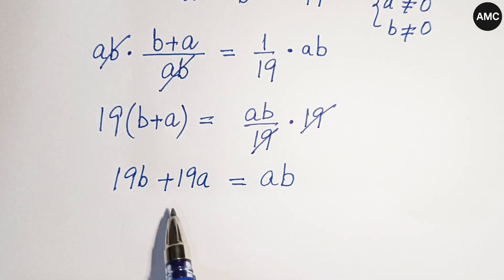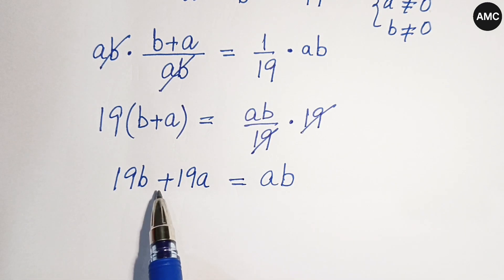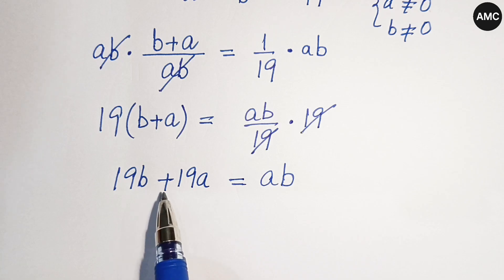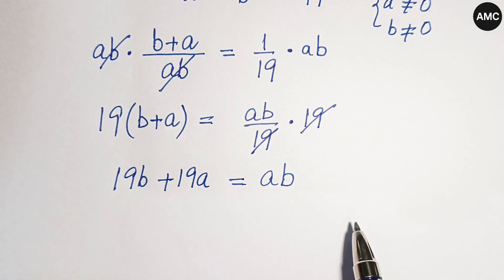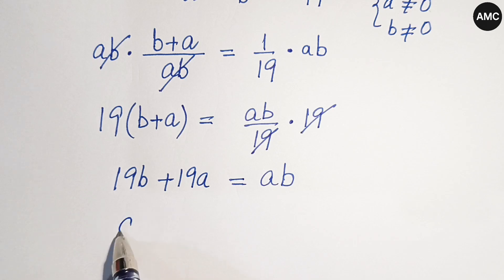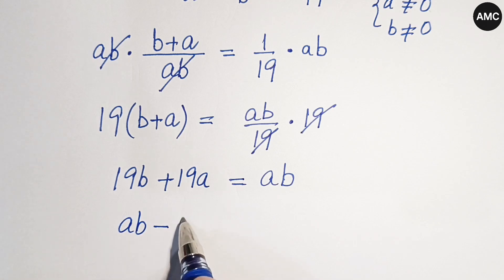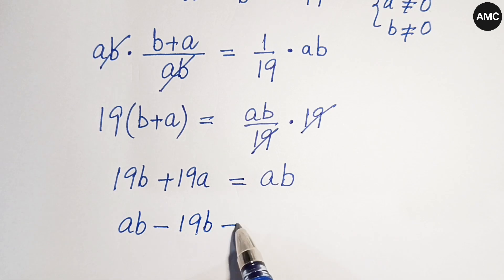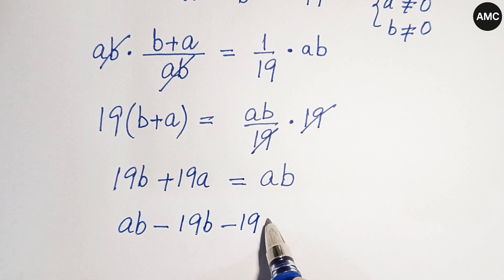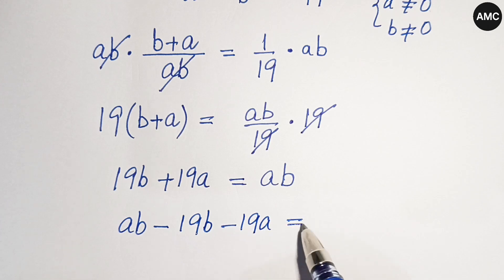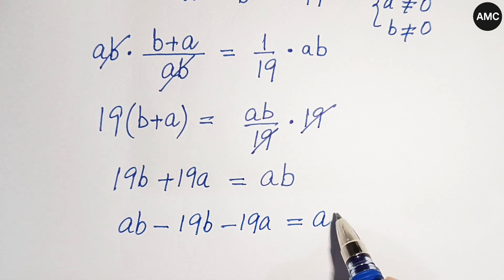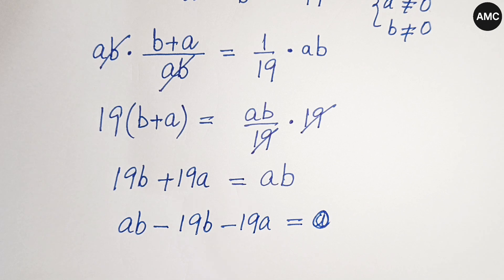Now shifting the two expressions to the right hand side, we get a times b minus 19b minus 19a equal to 0.